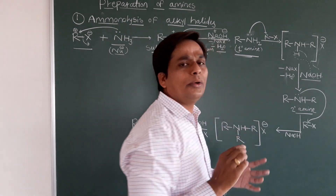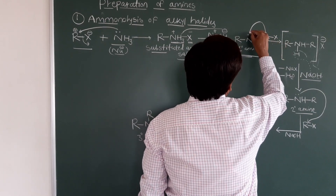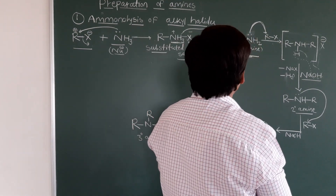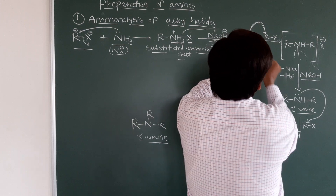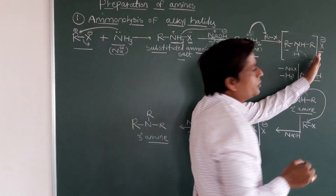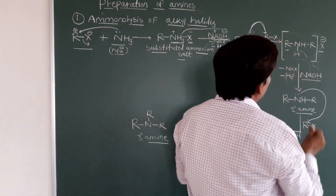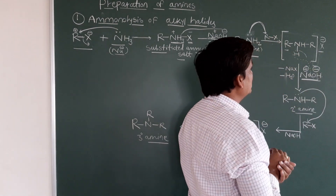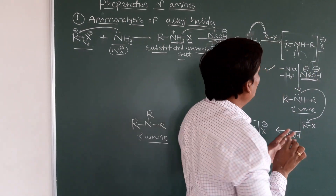So again, this primary amine treated with another alkyl halide RX — the nucleophile attacks on this carbon. We get a substituted intermediate product: R–NH2–R with X outside the bracket. Then this intermediate is treated with NaOH, the strong base. NaX is removed, as sodium combines with X⁻ to form sodium halide.